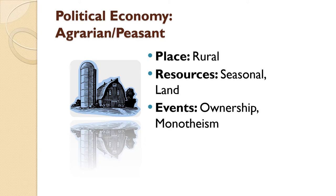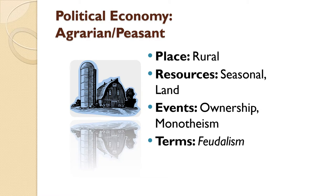Very often the deity is the one who gives legitimacy to the owners who own things. The term to know here is feudalism. Feudalism is a system of ranking that has occurred throughout Europe, Asia, a small amount in Africa, and a small amount in North and South America. Basically, feudalism is a system whereby those who own the land are essentially the rulers of the people who live on that land.